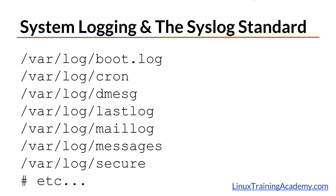A syslog service uses configurable logging rules to determine what to do with a given message. These rules use combinations of facilities and severities. In most cases, messages are simply written to a file in the /var/log directory, but you can do advanced things such as send the messages over the network to a central location.